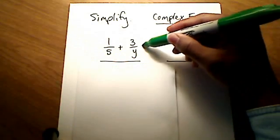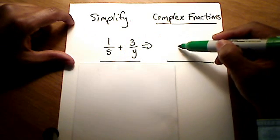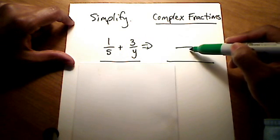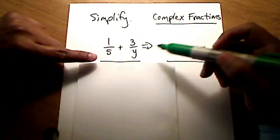Alright, so what I'm going to do is I'm going to add these two fractions. That's what we want us to do. They want us to add these two fractions. And to do that, I first need an LCD, which in this case is going to be 5y. So it's actually the product of both of these.